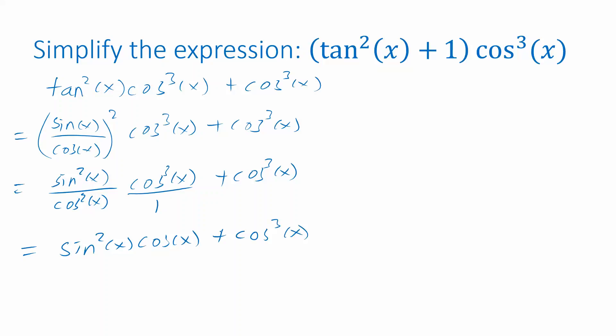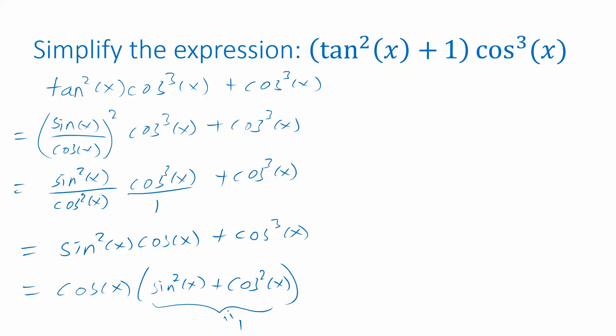You might think there's nothing more to do, but actually both terms share a common factor of cosine. Pulling that out leaves sine squared of x from the first term and cosine squared of x from the second term. That quantity, sine squared plus cosine squared, equals 1 by the Pythagorean identity. So we're really looking at cosine of x times 1, and the simplified form is just cosine of x.